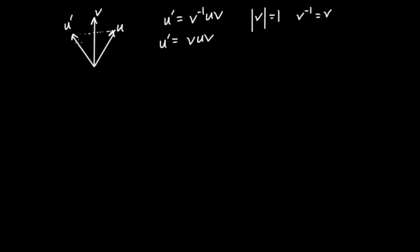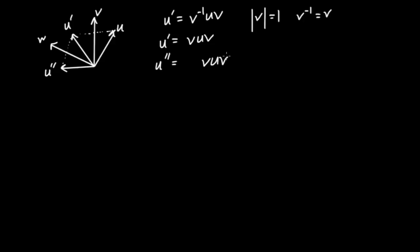In the special case where v happens to be of unit length, v inverse equals v, so the formula simplifies to v u v. To reflect u through the unit vector v, you hit it on both left and right with v through the geometric product. Now suppose we do this once again: we take u prime and another unit vector w, and reflect u prime through w to generate u double prime. Algebraically that's w times (v u v) times w.